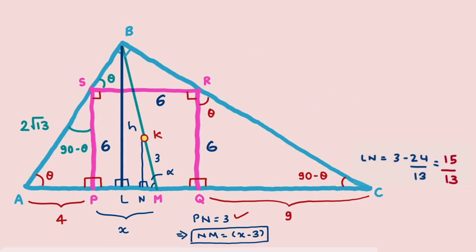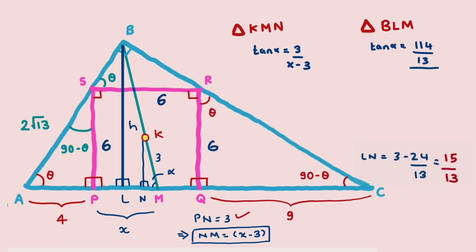With the key lengths marked, we compare trigonometric ratios in two right angle triangles: triangle KMN and triangle BML. In triangle KMN, tan alpha = 3/(X - 3). In triangle BML, tan alpha = H/(LN + NM) = (114/13)/((15/13) + (X - 3)). Comparing these two equations and solving gives X = PM = 18/5 cm.